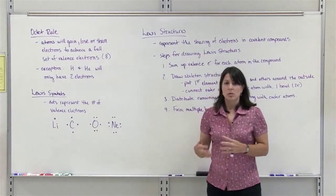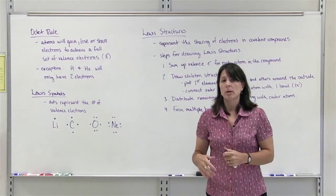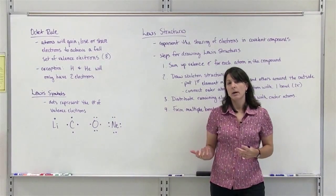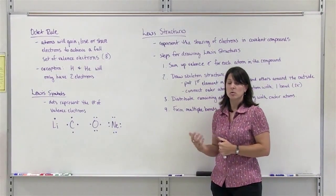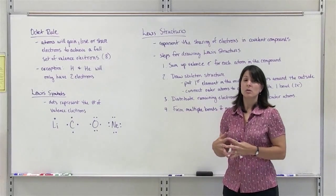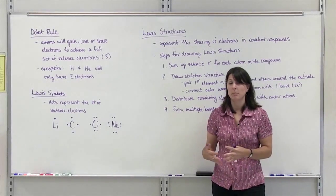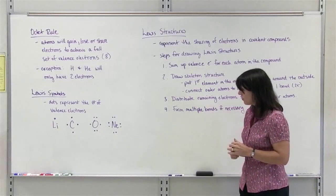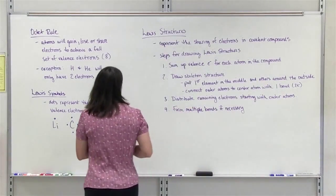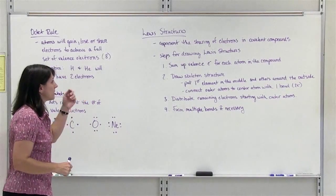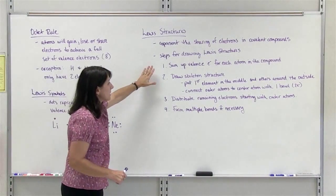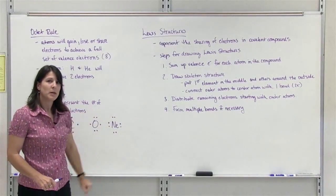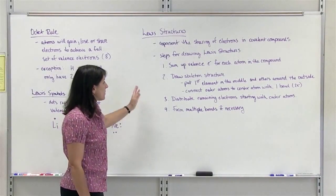Those are the Lewis symbols for just elements. We can make more complex Lewis structures for a whole compound that shows how the electrons are shared within that compound so that every element in the compound can achieve its octet, or its full set of electrons. The steps for writing a Lewis structure are written on the board here, and basically there are 3 or 4 steps depending on the structure or the compound.